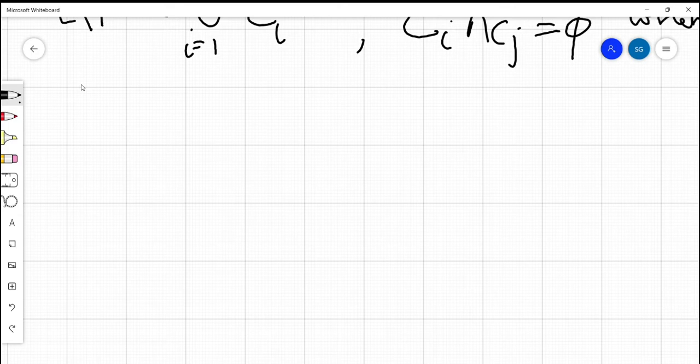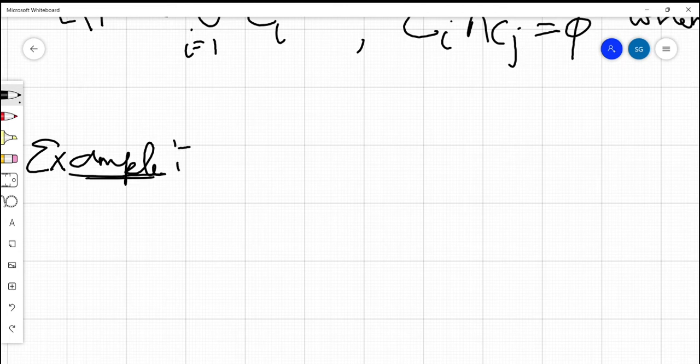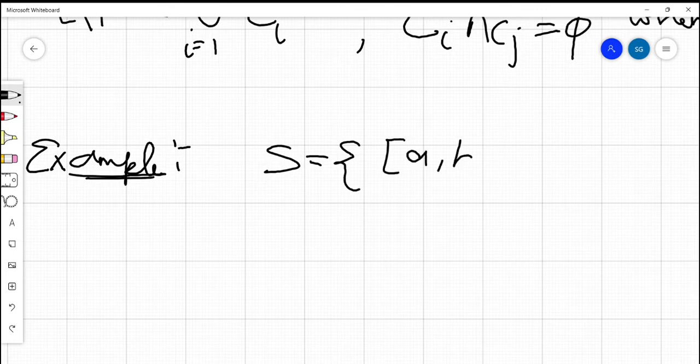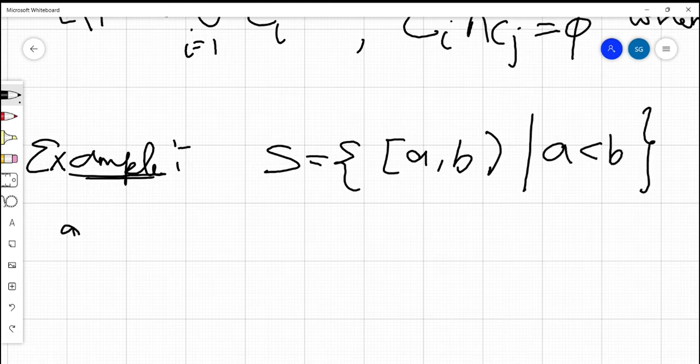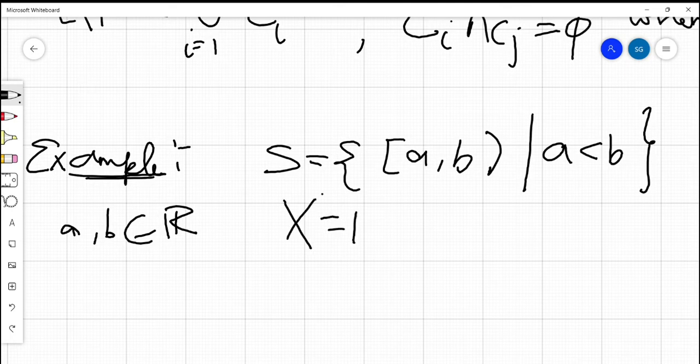Let us now look at an example for a semi-ring. Consider the set S which contains all the intervals of the form [a, b) where a is strictly less than b and a, b are real numbers. So therefore, S is a family of subsets from R. From the above notation, we are taking X to be R.